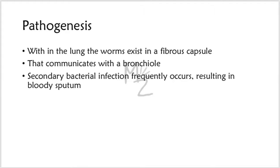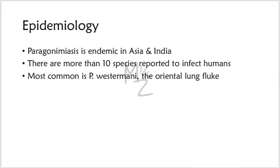Pathogenesis: within the lung, the worms exist in a fibrous capsule that communicates with a bronchiole. Secondary bacterial infection frequently occurs, resulting in bloody sputum. Epidemiology: paragonimiasis is endemic in Asia and India, and in the United States it occurs in immigrants from these areas. There are more than 10 species reported to infect humans, the most common being Paragonimus westermani — the oriental lung fluke.